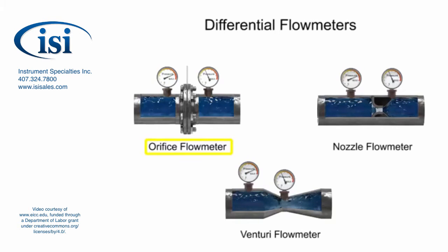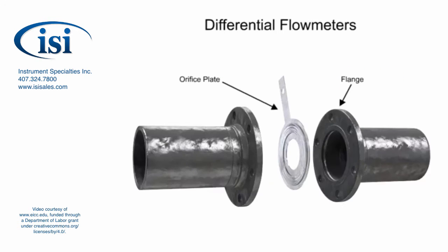The differential flow meter, whether Venturi tube, flow nozzle, or orifice plate style, is an inline instrument that is installed between two pipe flanges.